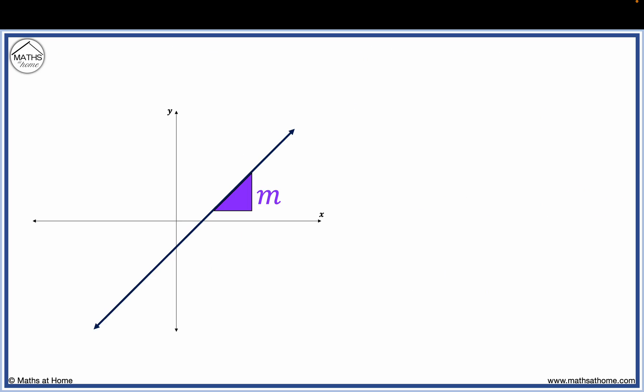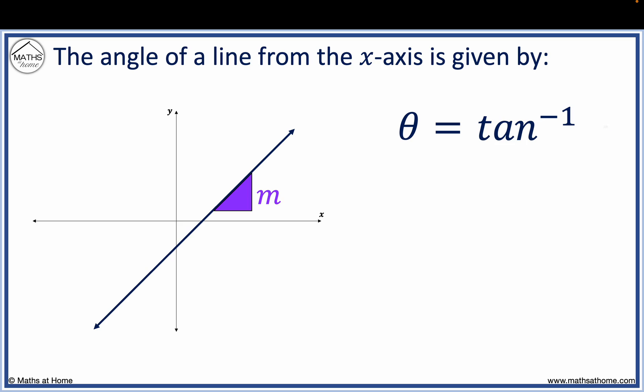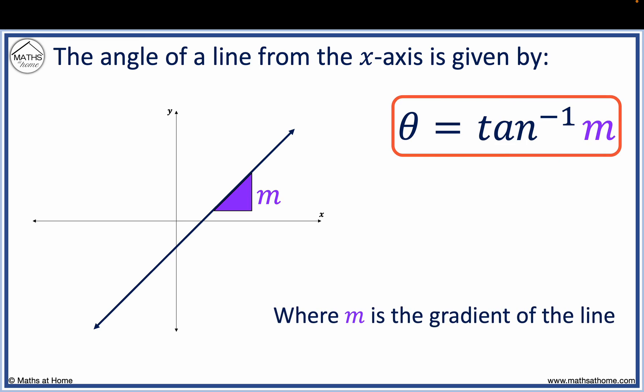Here is a line with gradient m. The angle of a line from the x-axis is given by theta equals inverse tan of m, where m is the gradient of the line.